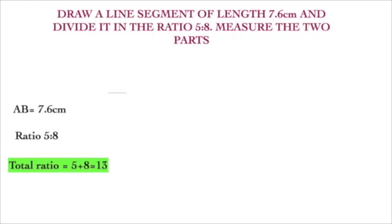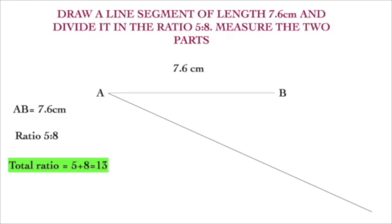Now the first step: draw a line and name it as AB. Draw a line of length 7.6 centimeters and name it AB. Second step: draw another line that should make an acute angle with the given line AB. No measurement is needed — just draw a line, but it must make an acute angle with AB. The total ratio is 13, so this new line that you have drawn should be divided into 13 equal parts from A.